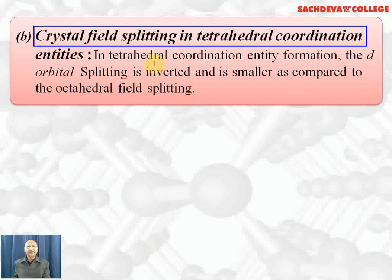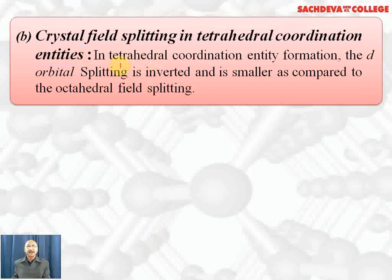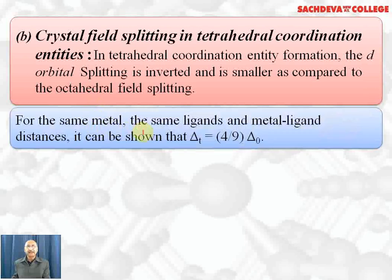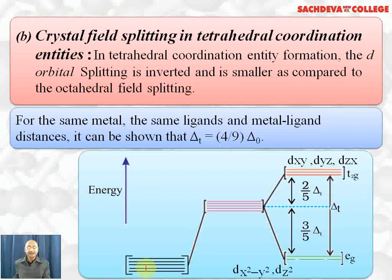Crystal field splitting in tetrahedral coordination entities: in tetrahedral complexes, the d orbital splitting is inverted and smaller compared to octahedral splitting. With the same metal, same ligands, and same metal-ligand distances, the tetrahedral splitting energy Δt = 4/9 of the octahedral splitting energy. In the tetrahedral field, ligands occupy positions between the axes.